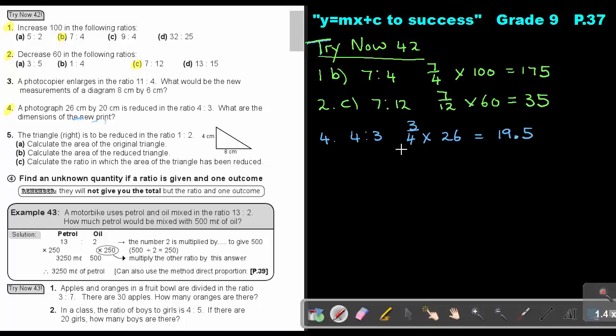And then the next one, I do it again and I just multiply it now with 20 and my answer will be 15. So I can say the new measurements will be 19.5 cm by 15 cm. That will be the new measurements.